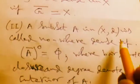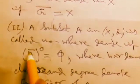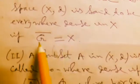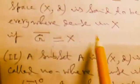So nowhere dense we use this property: A bar degree equals phi. And everywhere dense: G bar is equal to total entire space. This is empty and this is entire space. This is our concept.